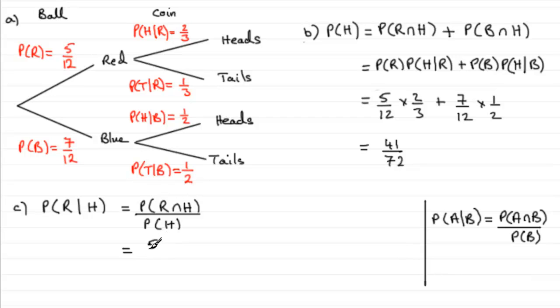So it's going to be five twelfths multiplied by two thirds. And then we divide this by the probability of H. And the probability of H, we worked out. It was 41 over 72. And if you work all of this out, you'll find you get exactly 20 out of 41. And there's your answer.